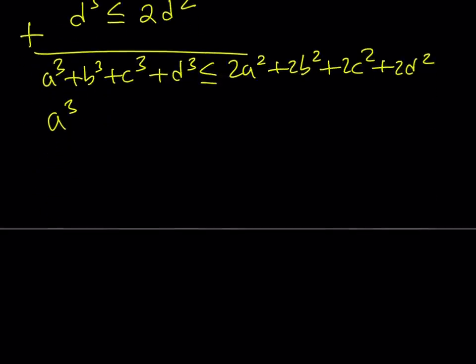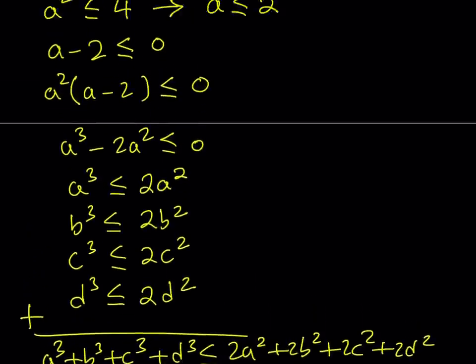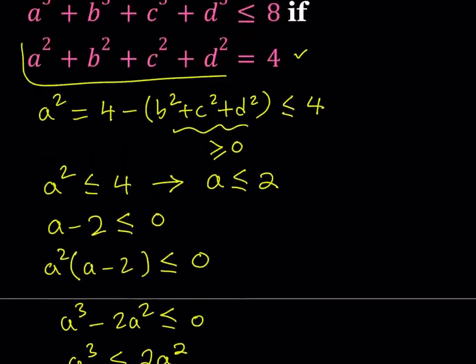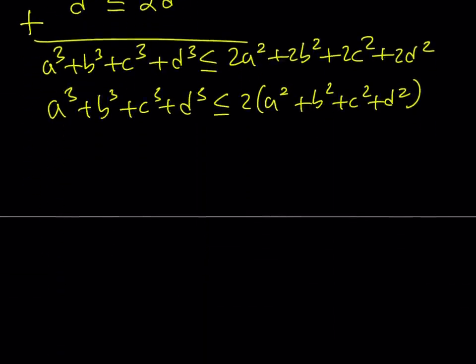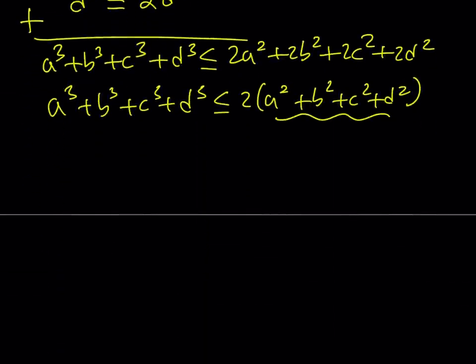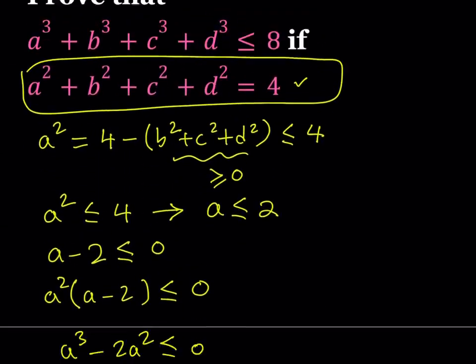Obviously this expression can be factored on the right hand side. Let's take out the 2. We're going to get a squared plus b squared plus c squared plus d squared. And we're given that a squared plus b squared plus c squared plus d squared is equal to 4 in our expression. Therefore, we can just replace it with 4. This is equal to 4. Therefore, the sum of the cubes, a cubed plus b cubed plus c cubed plus d cubed is less than or equal to 2 times 4, which is 8. And that's what we were trying to prove.